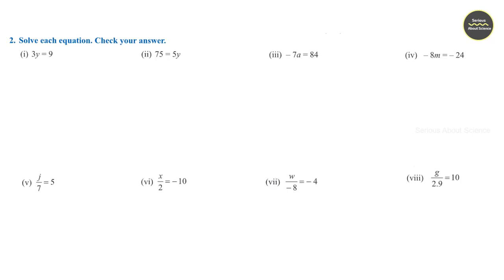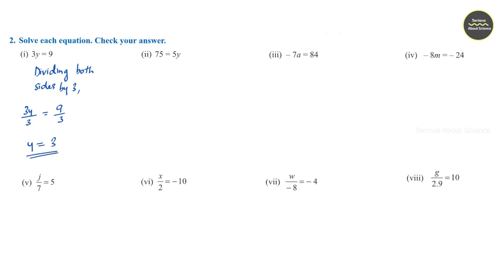Section 2: Solve each equation. First question: 3y is equal to 9. To eliminate this coefficient, we divide both sides by 3. So 3y by 3 is equal to 9 by 3, that is, y is equal to 3.